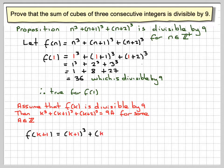Then f of k plus 1 will be k plus 1 cubed plus k plus 1 plus 1 cubed, k plus 1 plus 2 cubed. So we put in here k plus 1 for n. We're going to now simplify that.